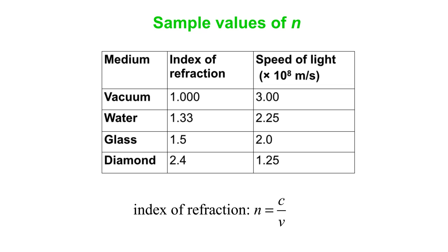Here are some sample values of N, the index of refraction. Vacuum, by definition, has an index of refraction of exactly 1. Water is about 4 thirds. Glass is about 3 halves. And diamond is 2.4 — it doesn't sound a lot bigger than vacuum, but that is one of the biggest indices of refraction out there. The corresponding speed of light: 3 times 10 to the 8 for vacuum, 2.25 times 10 to the 8 meters per second for water, 2 times 10 to the 8 for typical glass — 1.5 is a reasonable typical value. And for diamond, 1.25 times 10 to the 8 meters per second. Still very fast, but somewhat slower than in vacuum.